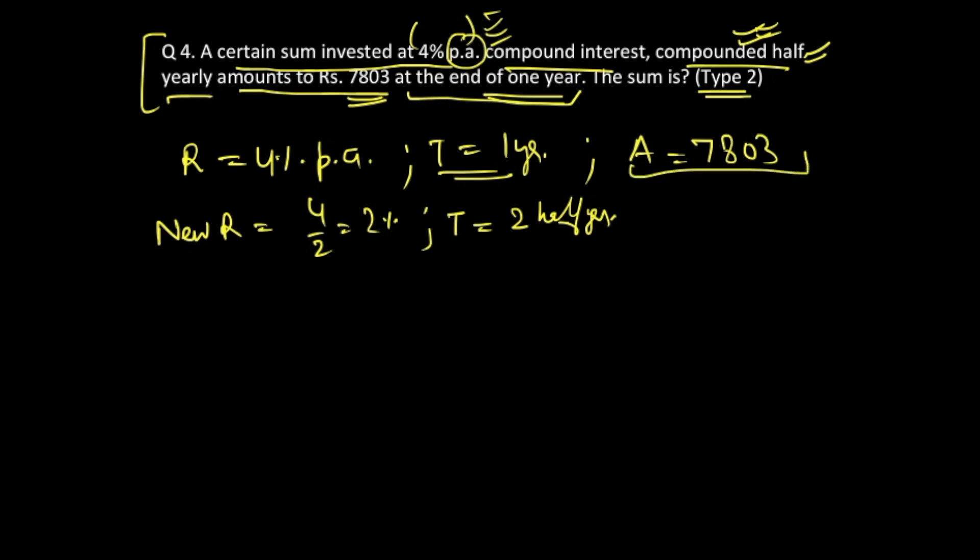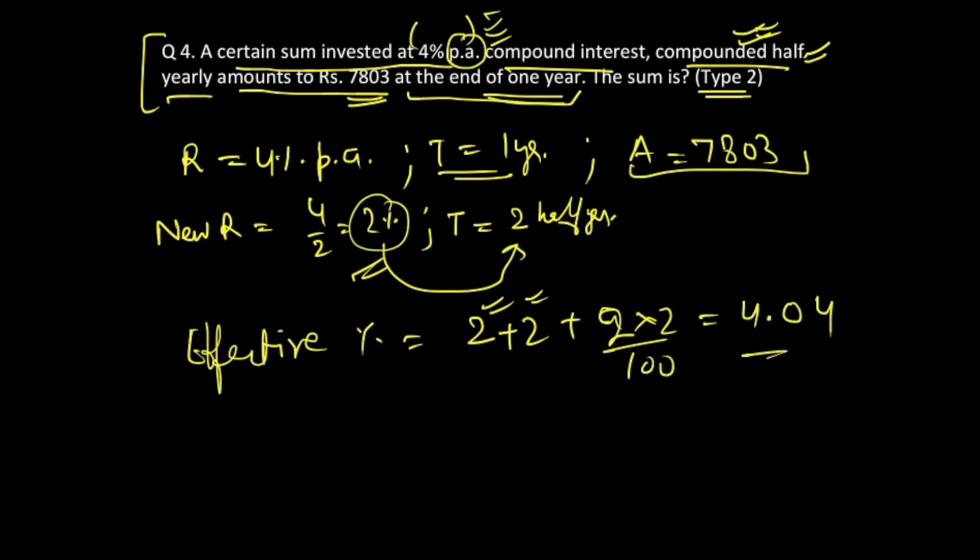And time period is given as one year, so time is getting multiplied by 2, giving you two half years. Amount is going to remain the same, which is 7803. So now we'll use this 2% for these two half years. We are going to use effective percentage formula, so effective percentage for two periods with this 2% rate is A plus B plus AB by 100. Here A and B both are 2, so 2 plus 2 plus 2 into 2 by 100.